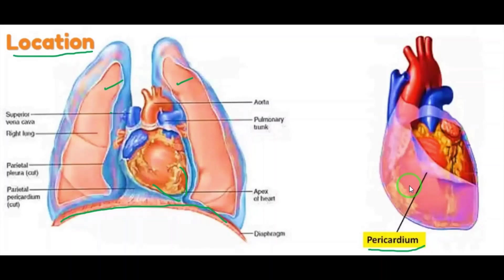This pericardial fluid reduces friction during the heartbeat. Just imagine a door — sometimes when we open or close it, it produces sound, and we apply oil to the hinges. That oil acts as a lubricating fluid and reduces friction. Similarly, pericardial fluid also reduces friction during the heartbeat.